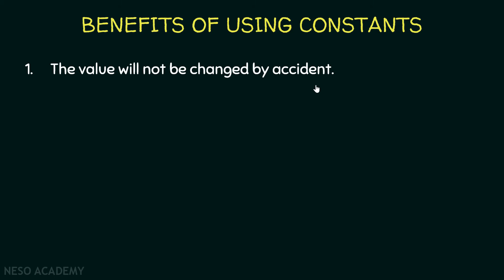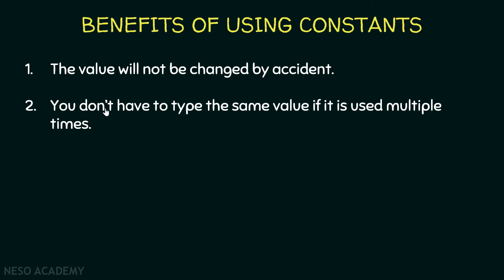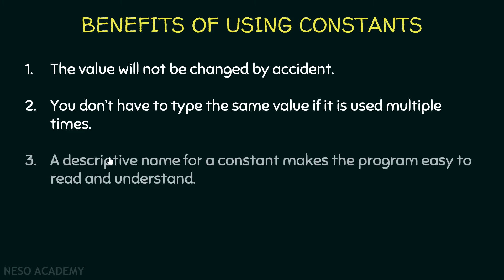Now let's see some benefits of using constants. First, the value of the constant will not be changed by accident, because you will get a syntax error whenever you try to change it. Also, you don't have to type the same value if it is used multiple times. Suppose you are printing a string 10 times — instead of typing it 10 times you can store the value in a constant and use the constant 10 times. If you want to change the string, all you have to do is change the value of the constant. Finally, a descriptive name for the constant will make the program easy to read and understand.